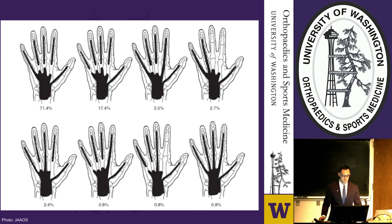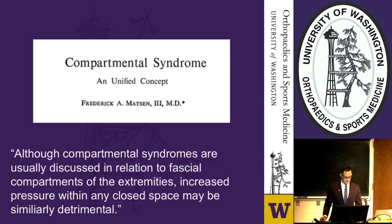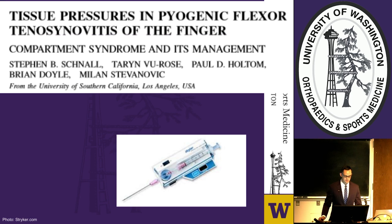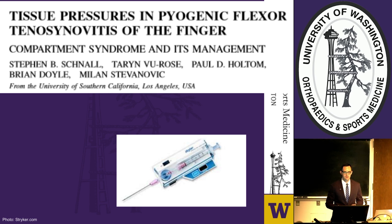Dr. Matson, in his work on compartment syndrome, explained that although compartmental syndromes are usually discussed in relation to fascial compartments of the extremities, increased pressure within any closed space may be similarly detrimental. One belief behind flexor tenosynovitis is that it represents a possible compartment syndrome of the finger itself. A study from USC used a Stryker-type device to measure compartment pressures in fingers with confirmed flexor tenosynovitis, comparing them to a contralateral control digit, and found elevated pressures in all affected digits.